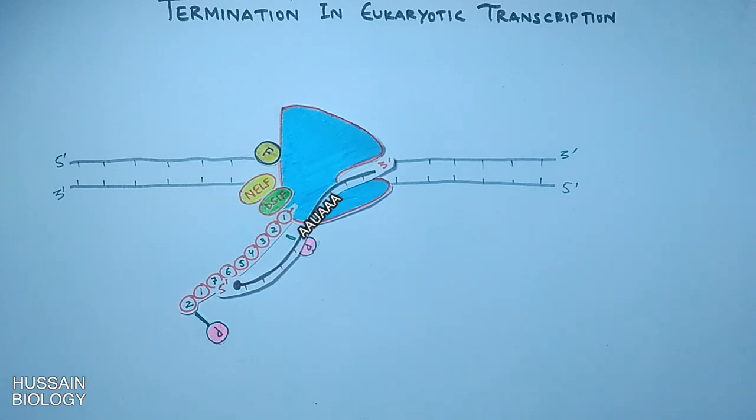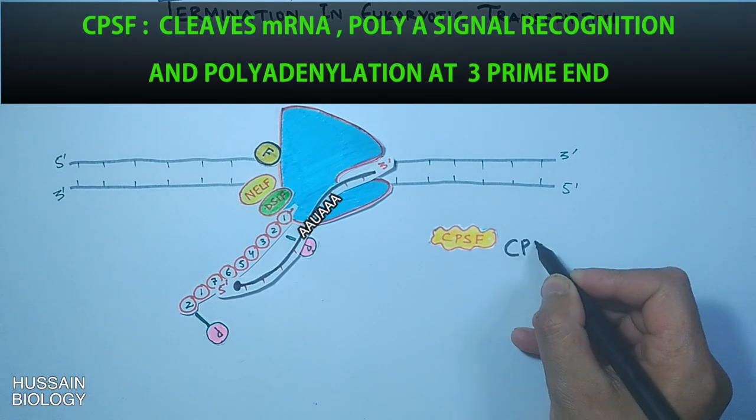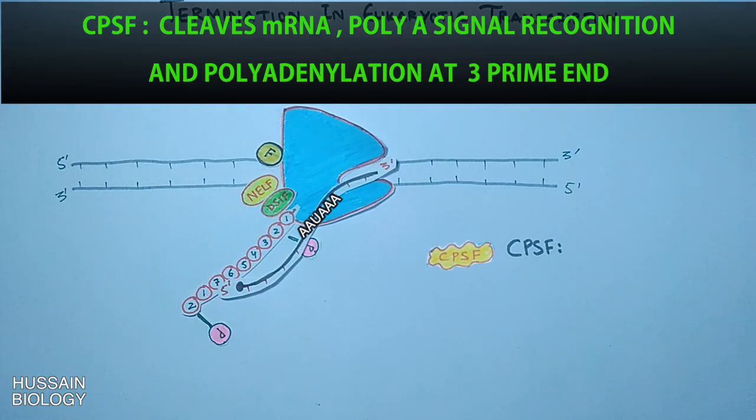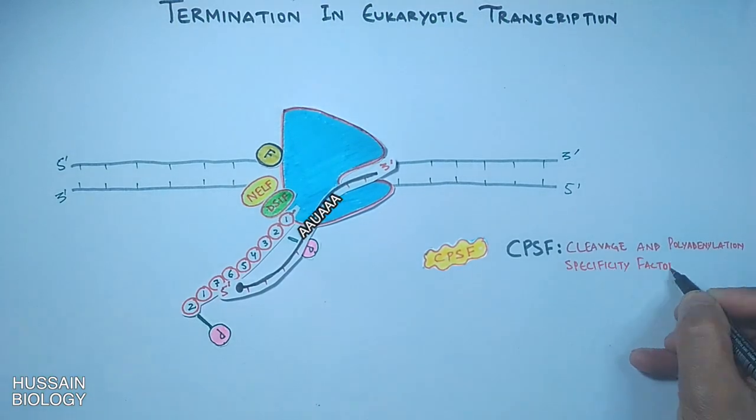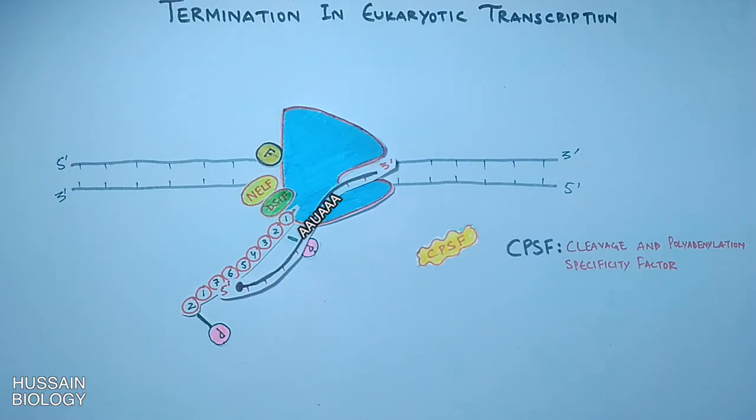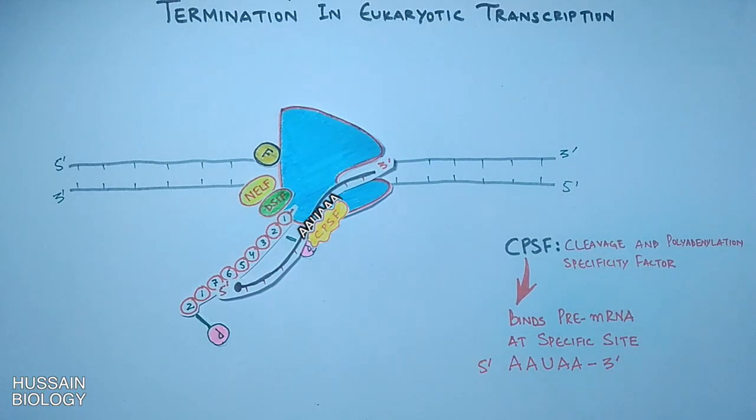So for this termination signal we have a molecule that interacts with it. First we have the CPSF, that's cleavage and polyadenylation specificity factor. This CPSF binds with the pre-mRNA on AAUAAA poly-A signal.